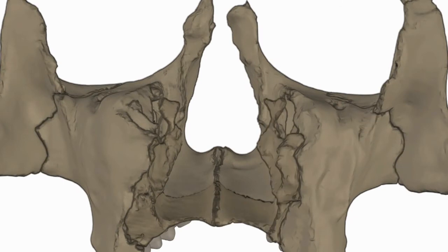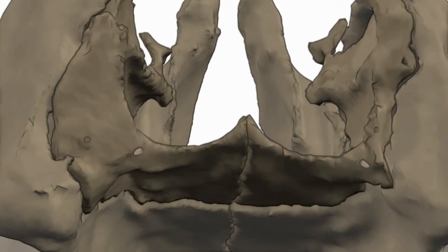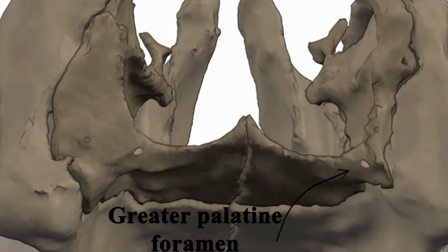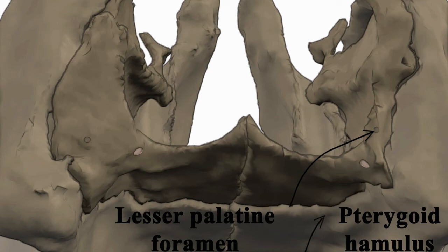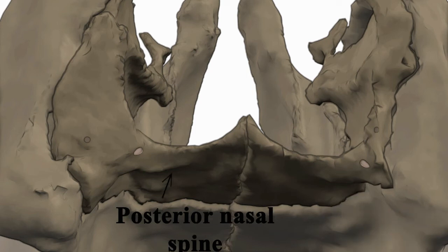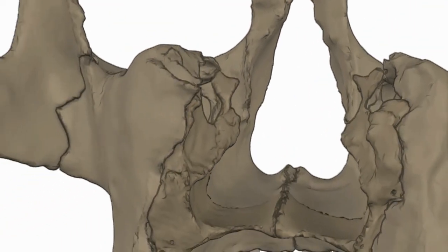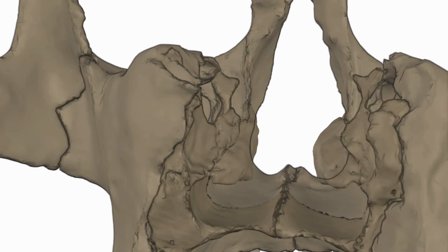Left and right palatine bones are present behind the maxillary bones. These bones consist of palatine shelves. Each palatine bone contains greater palatine foramen, lesser palatine foramen, pterygoid hamulus, and posterior nasal spine. Left and right inferior nasal conchae are present medial to the palatine bones and above the palate. The vomer bone is present at the center above the palate.